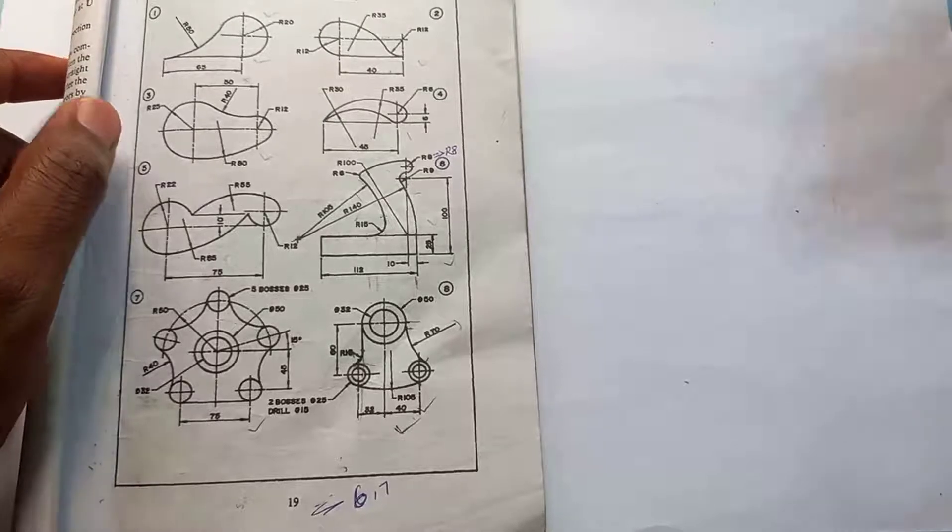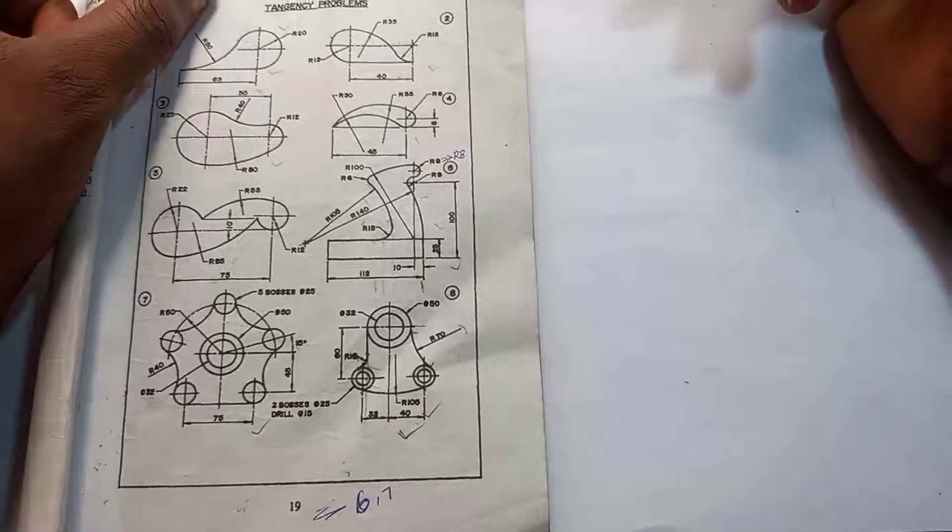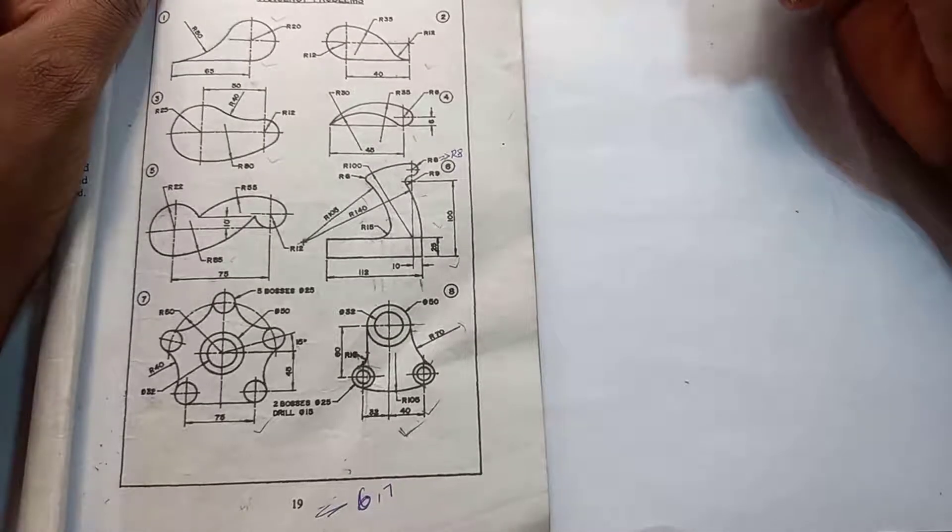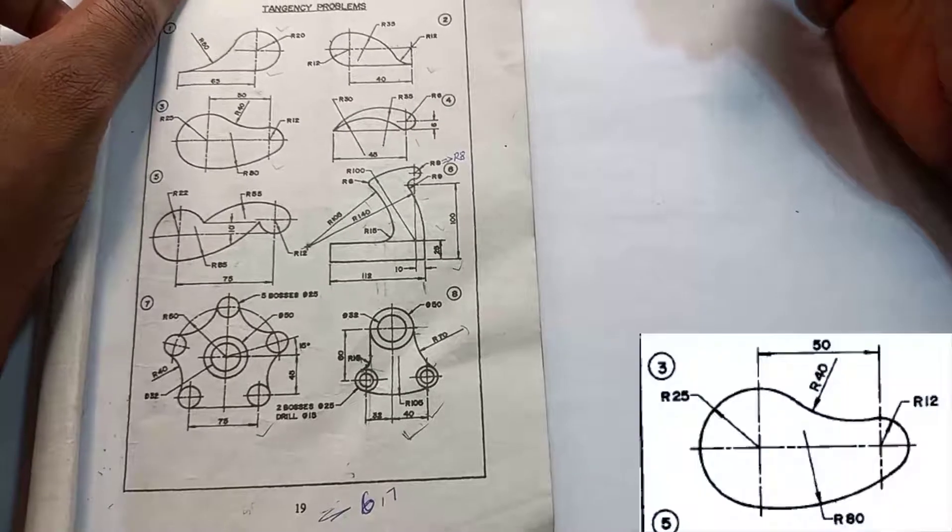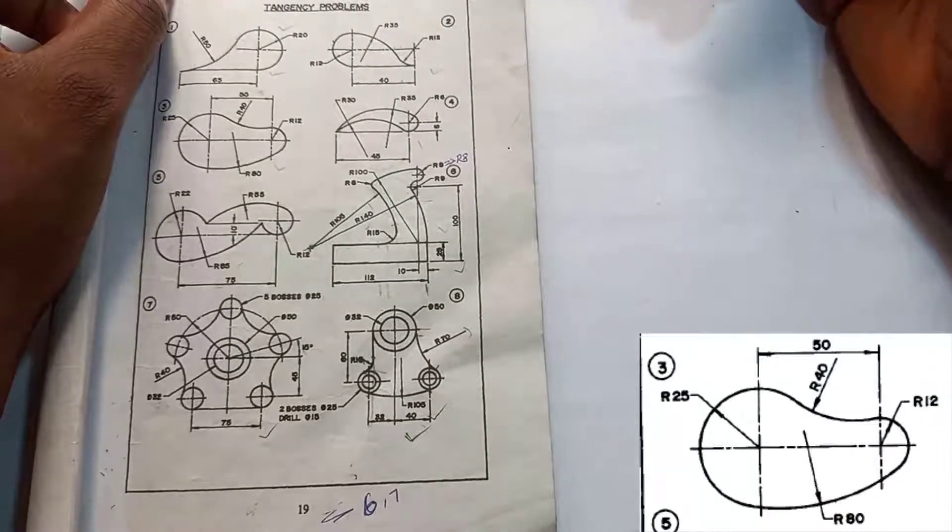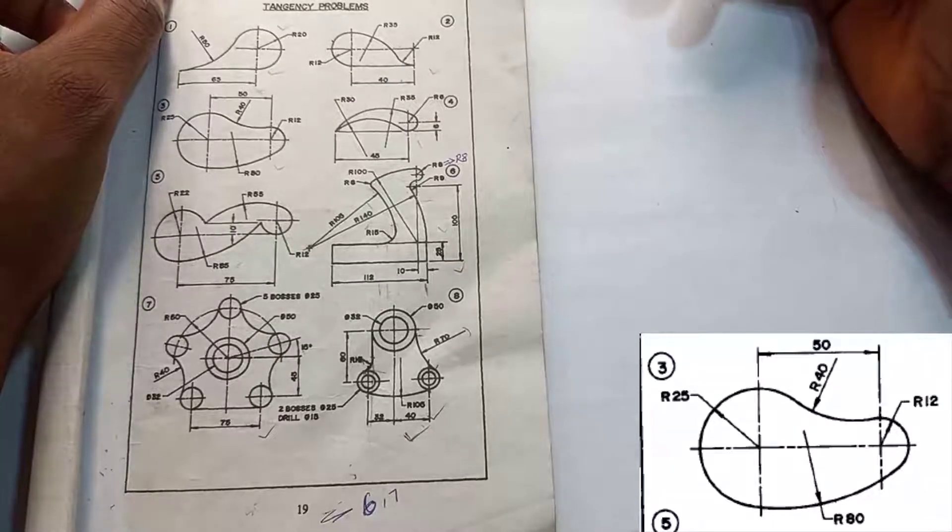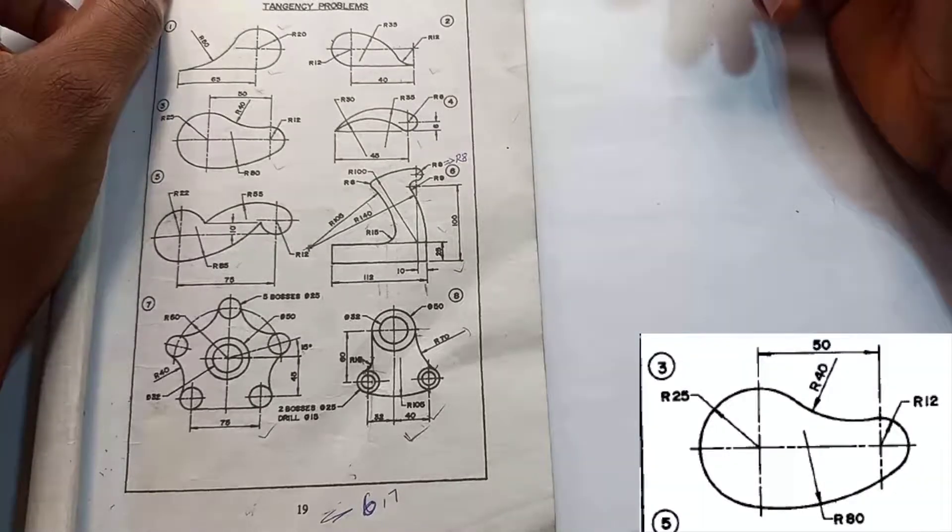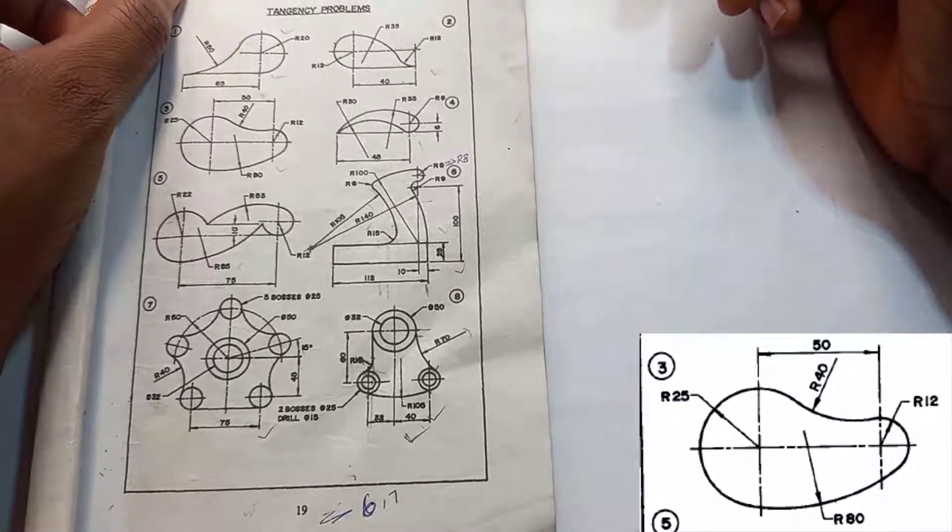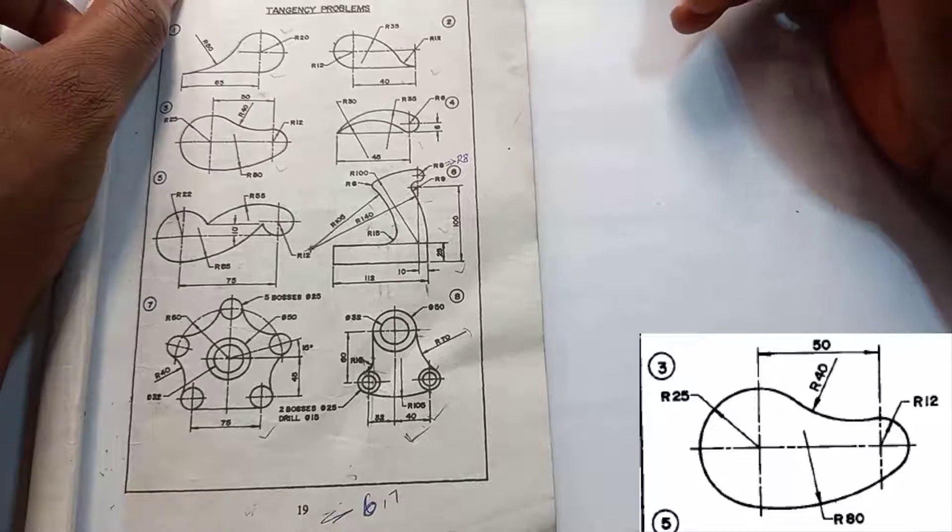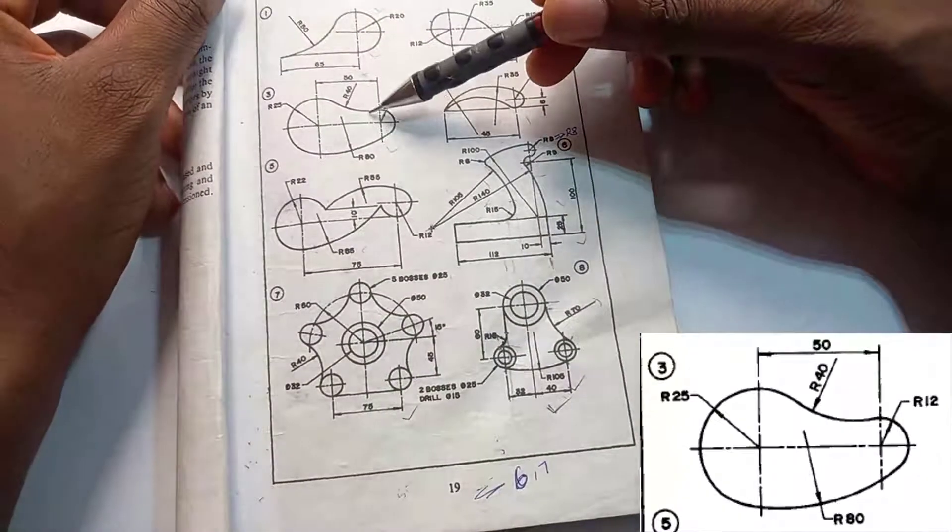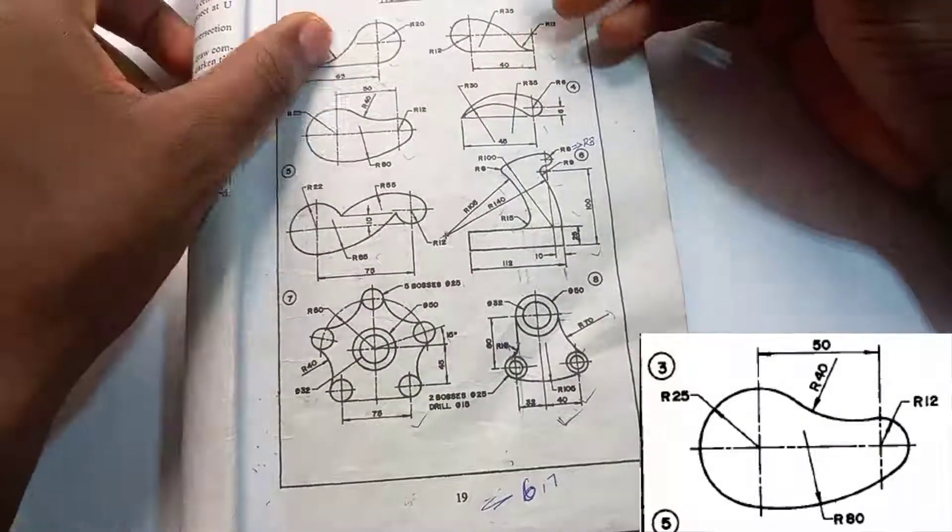Okay, so welcome to another episode of a series on tangency. Today we'll be taking number five of the tangency problems from Pick Up and Pack Up Book One, page 19. Sorry, number three. Yeah, number three. So it's this guy. Let's go straight to it.